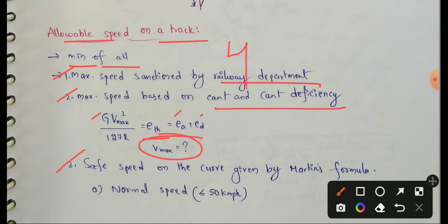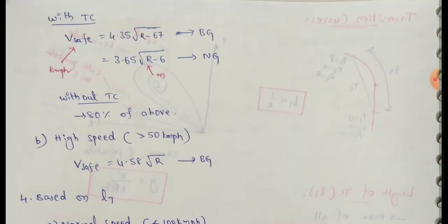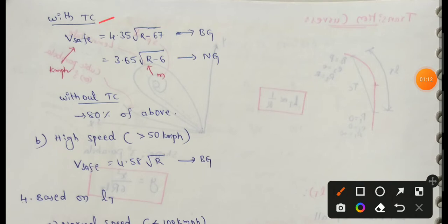Third one: safe speed on a curve given by Martin's formula. Martin's formula has two types of speeds — normal speed and high speed. Normal speed is less than 50 km/h. For normal speed, with respect to the transition curve, safe speed equals 4.35 into root of (R − 67). This is for broad gauge.